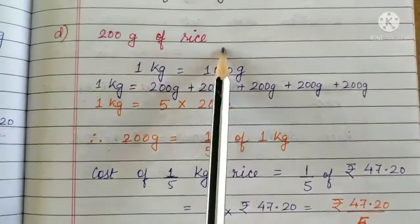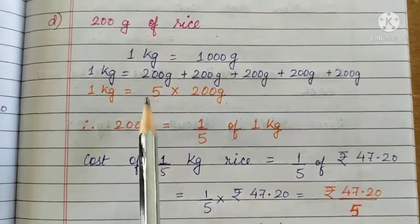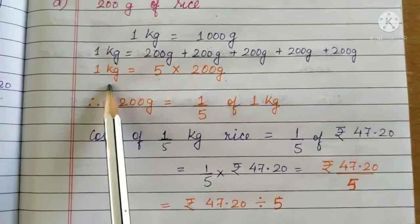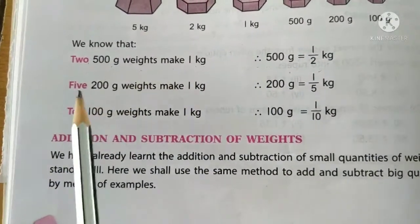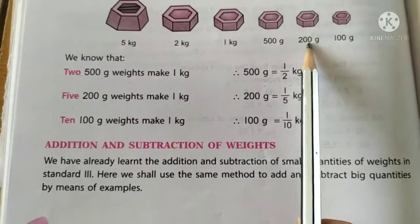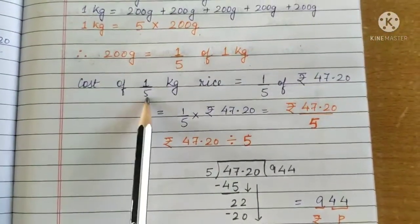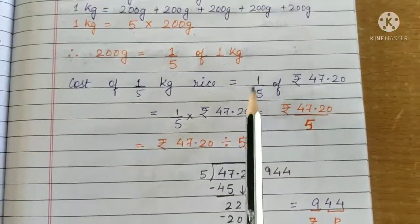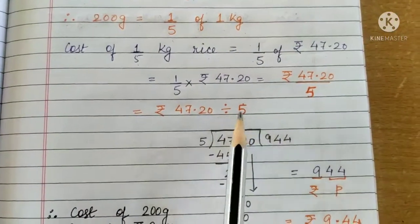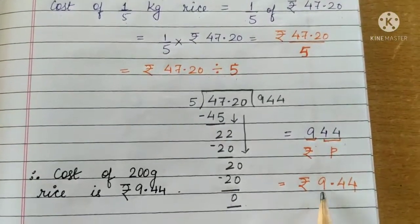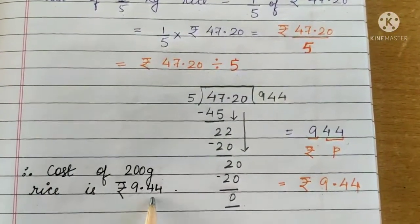D. 200 grams of rice. 1 kilogram equals 1000 grams, or 1 kilogram equals 5 weights of 200 grams. Therefore, 200 grams equals one-fifth of 1 kilogram. Cost of 200 grams of rice is one-fifth of 47 rupees 20 paise, that is, 47 rupees 20 paise divided by 5. The quotient obtained is 944, that is, 9 rupees and 44 paise. Therefore, cost of 200 grams of rice is 9 rupees 44 paise.